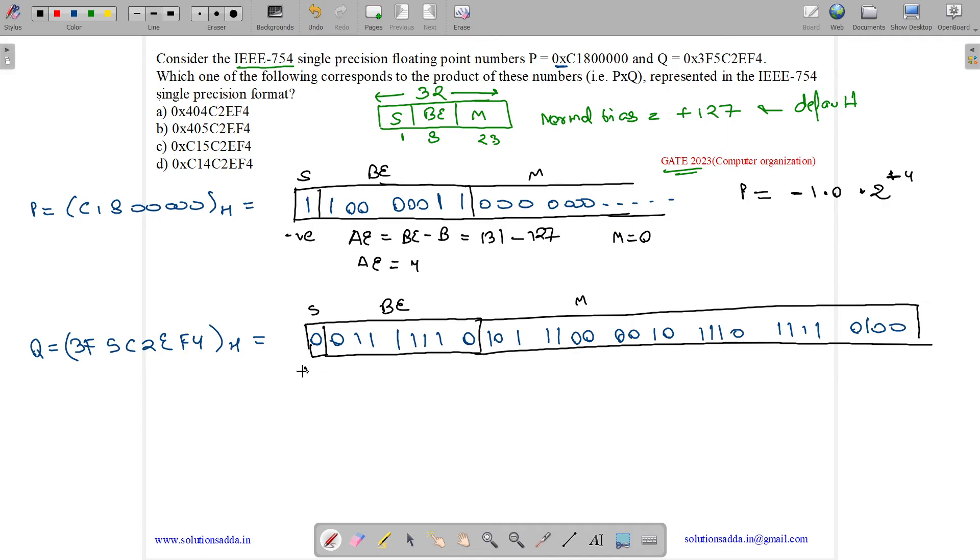This is sign, biased exponent, and mantissa. We have positive sign. What is actual exponent? Actual exponent is biased exponent minus bias. The value of biased exponent is 126, minus bias 127, so actual exponent is -1.